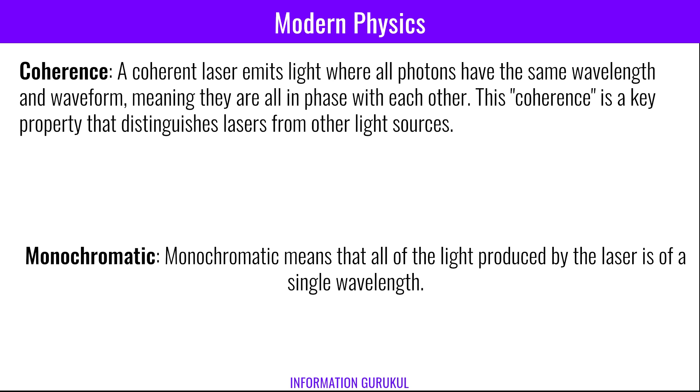A coherent laser emits light where all photons have the same wavelength and waveform, meaning they are all in phase with each other. This coherence is a key property that distinguishes lasers from other light sources. Monochromatic means that all of the light produced by the laser is of a single wavelength.